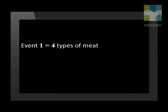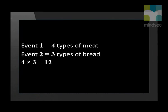Let's look at another example that uses this method. There is a shop that sells four different types of meat — poloni, ham, roast beef, and salami — and three types of bread: whole wheat, brown, and white bread. How many different types of sandwiches can they make? If event one equals four types of meat and event two equals three types of bread, then four times three gives us 12 different types of sandwiches.